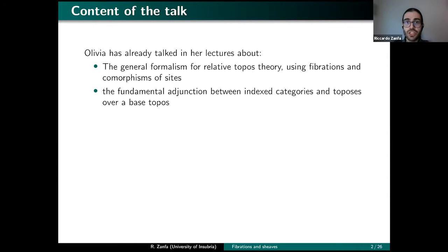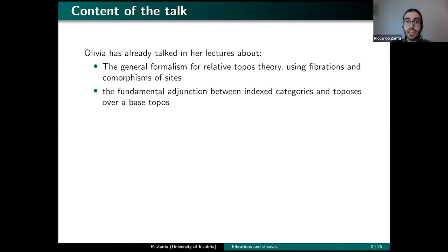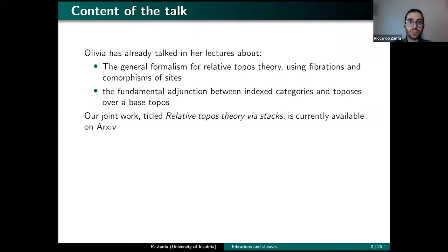She also mentioned the fundamental adjunction which we proved, which connects on one side cloven fibrations over a base category, or indexed categories over that category, and the toposes over the base topos of sheaves for that category when endowed with a topology. This work is called 'Relative Topos Theory via Stacks' and can be found on arXiv — it's an ongoing project.